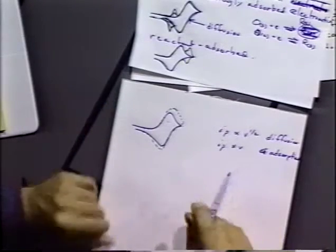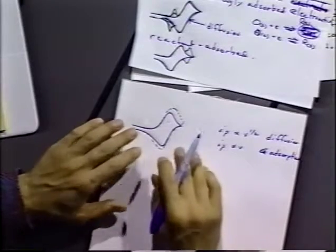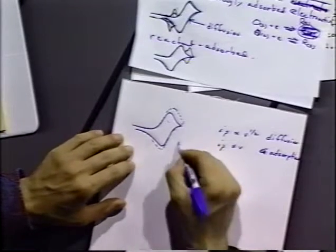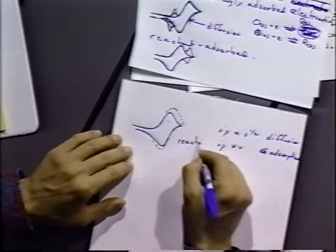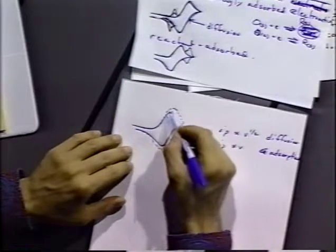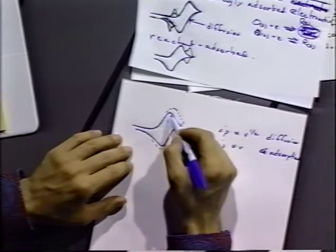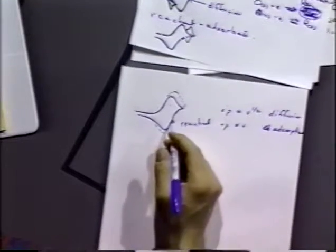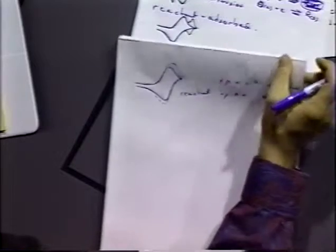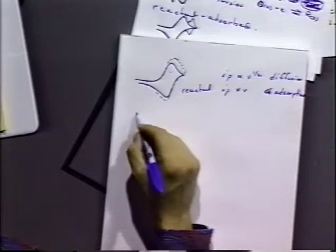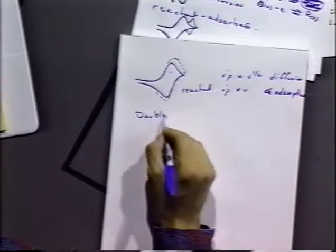And for, this is for reactant adsorbs. For product being adsorbed, you'd have a similar thing, except the wave would come up a little higher on the forward process rather than the reverse. Well, it's hard to tell sometimes from the CV. It's a little easier to tell with other methods. One way that people have used to tell if we're getting adsorption on the electrode surface is to use double potential step chrono-coulometry.